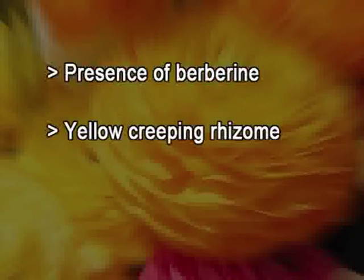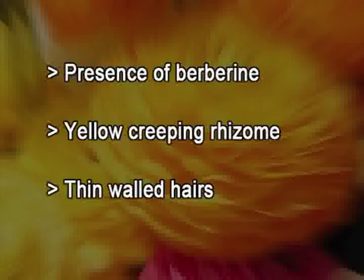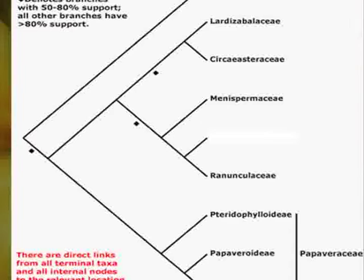These basal genera, whether Hydrastis or Glaucidium, have retained some plesiomorphies — meaning ancestral shared characters that are ancestral in evolutionary terms but shared by recent taxa. Such plesiomorphies include the presence of berberine, a yellow creeping rhizome, thin-walled vessels, and smaller chromosomes; all these characters relate them to Berberidaceae, a different family.